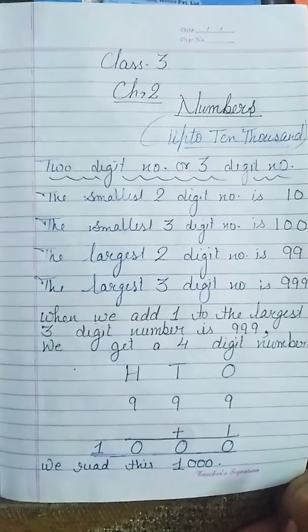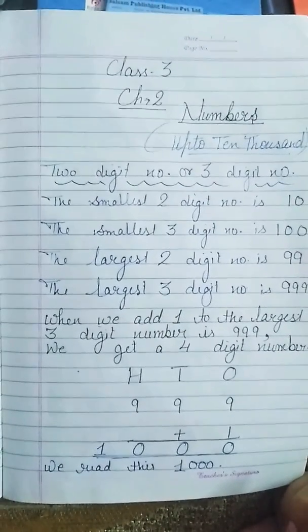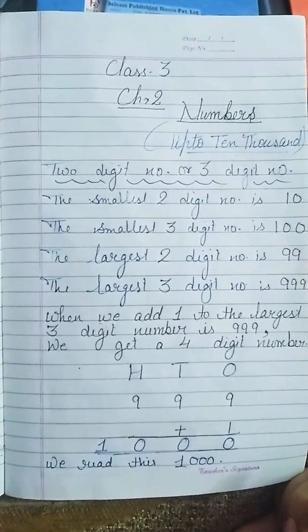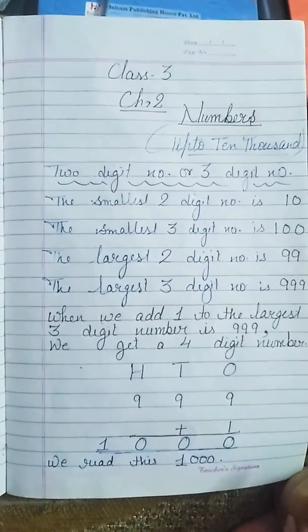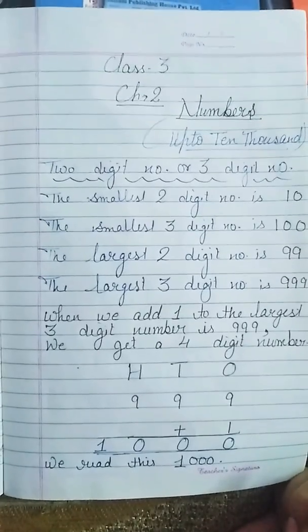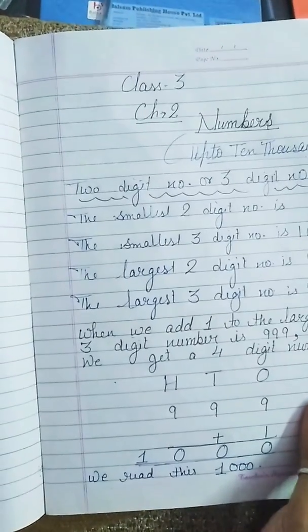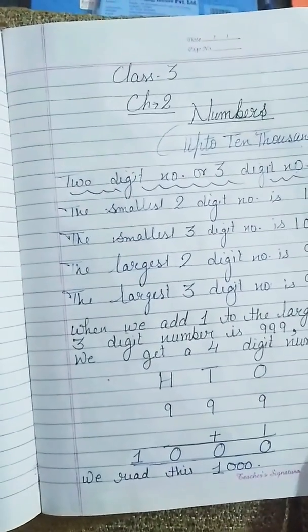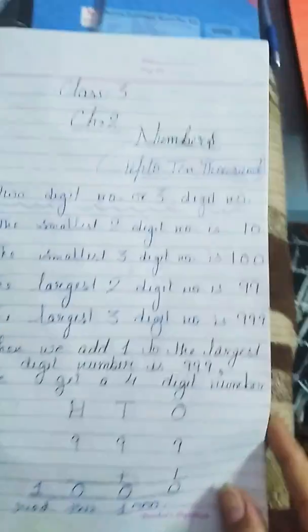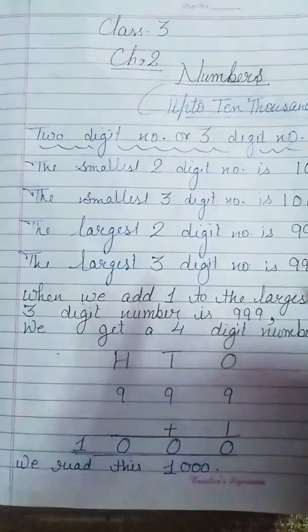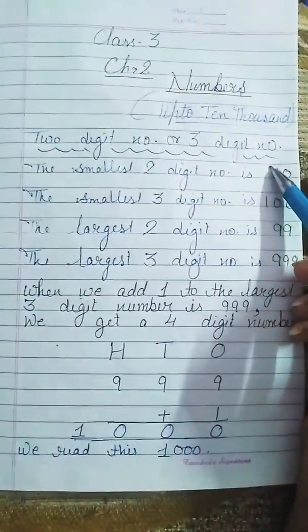Today we are going to learn mathematics which we use in day to day life. In class 2, you have learned 2 or 3-digit numbers. Now in class 3, we are going to learn about 4-digit numbers with the help of abacus and the place value chart.